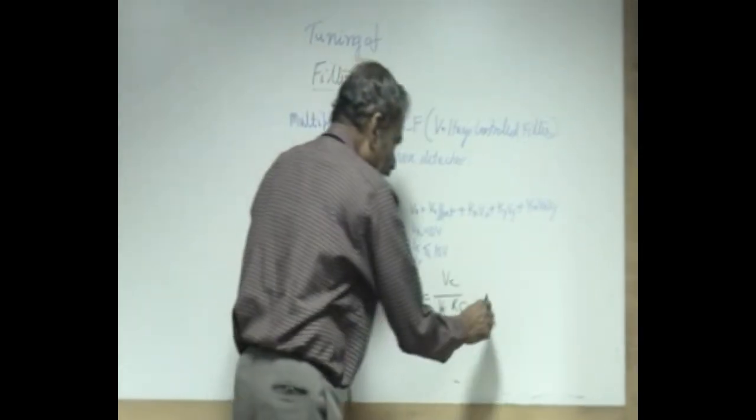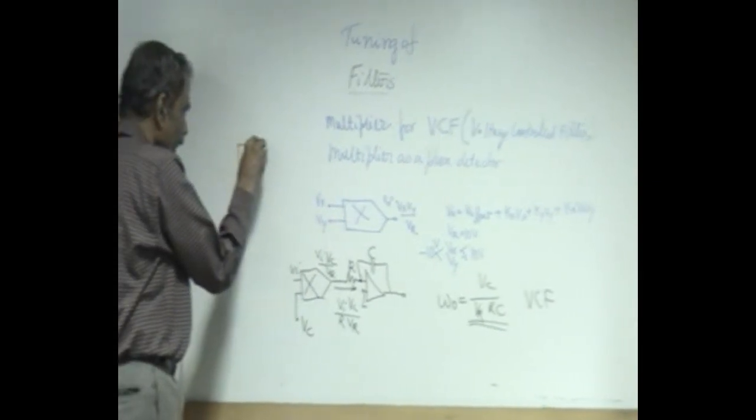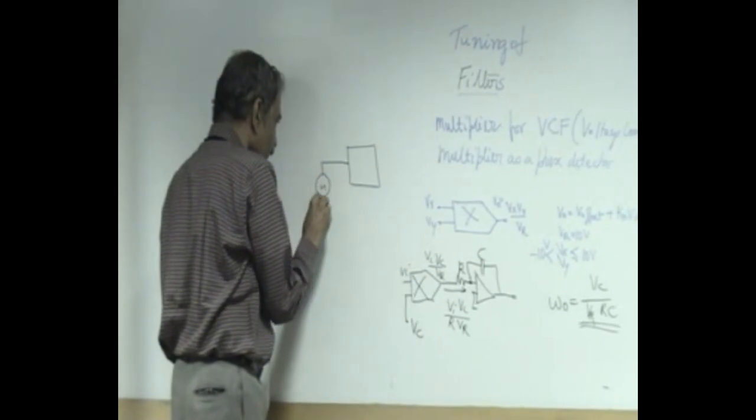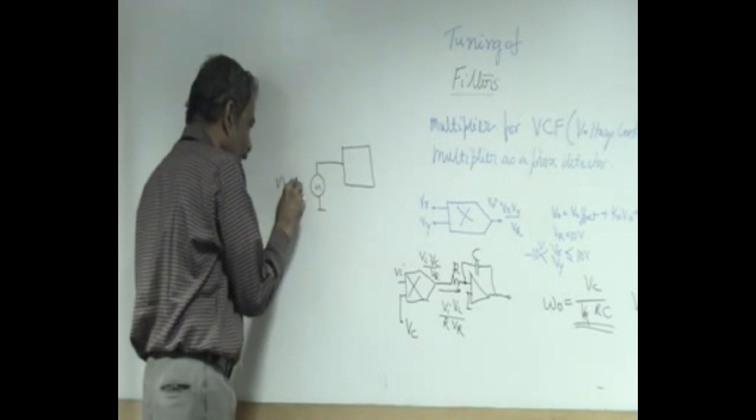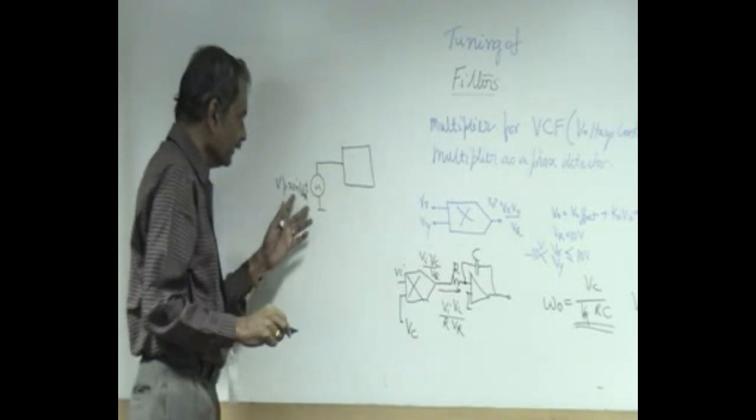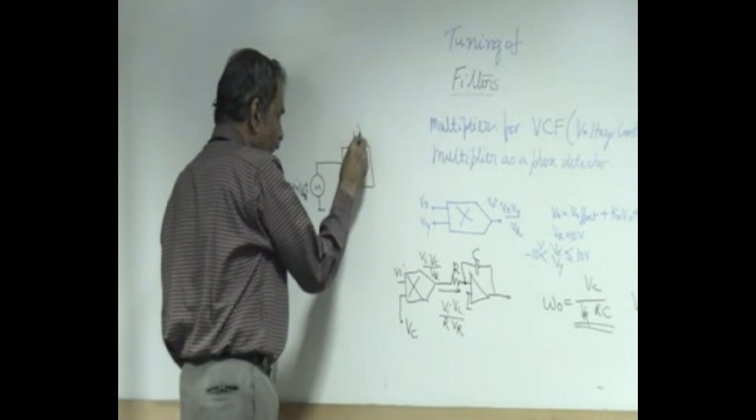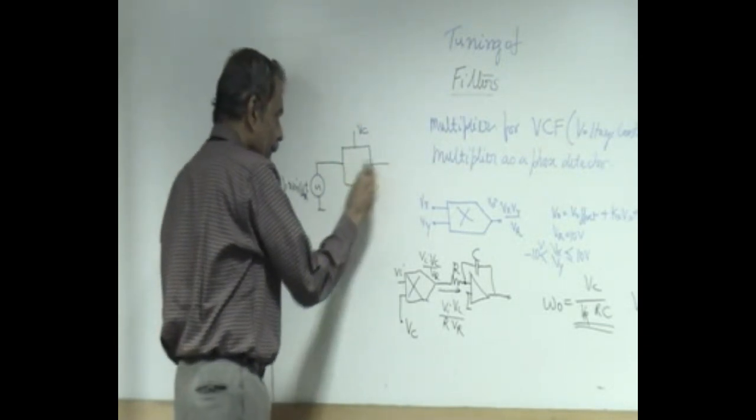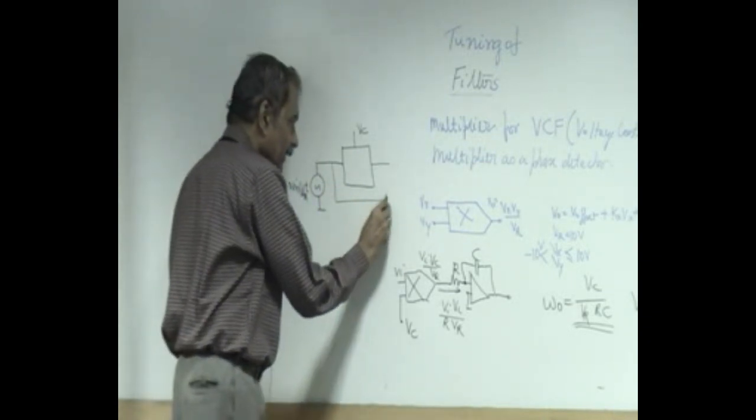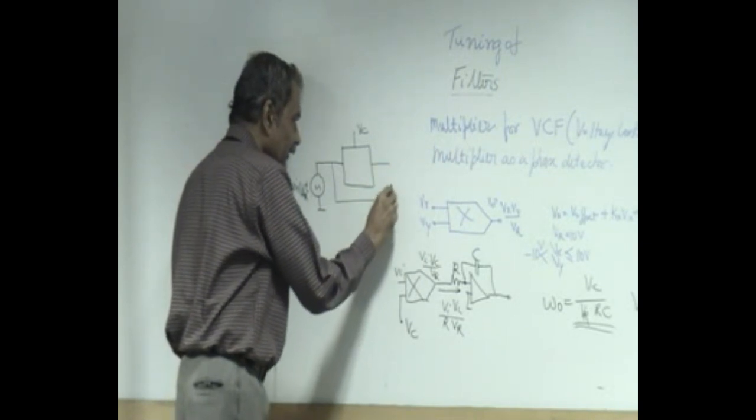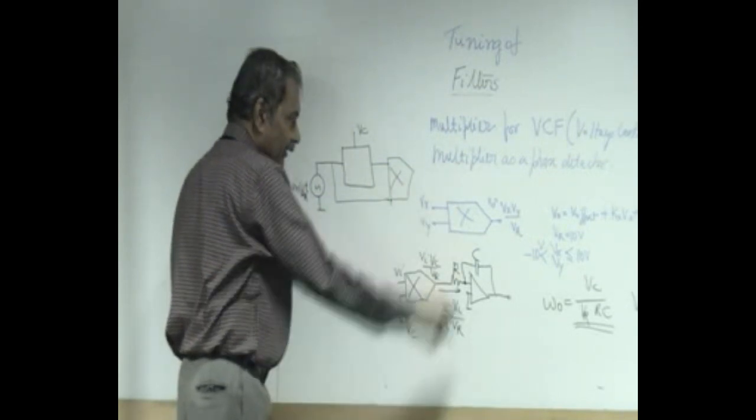So, let us say we have this voltage control filter block which is getting an input frequency. Our purpose is now this is v_p sin omega_r t, it is a reference frequency that we are having as input. We want our filter which has a control voltage to be tuned exactly to this incoming frequency. Now, we are comparing the incoming frequency and the output frequency using this multiplier as the phase detector.